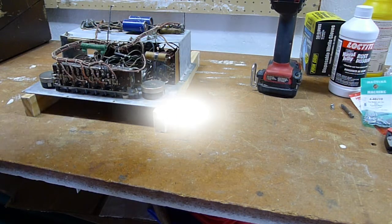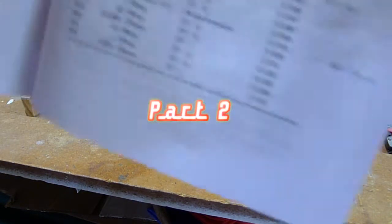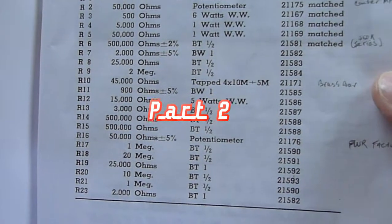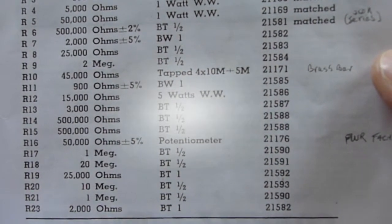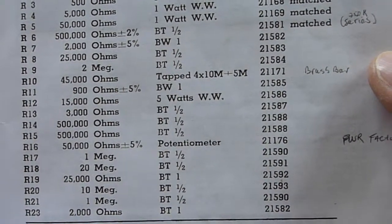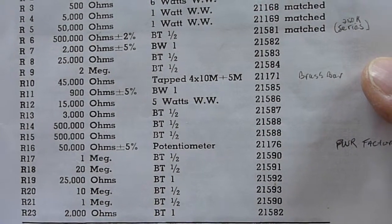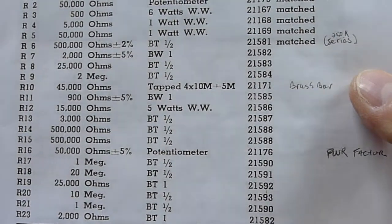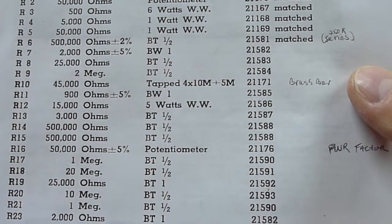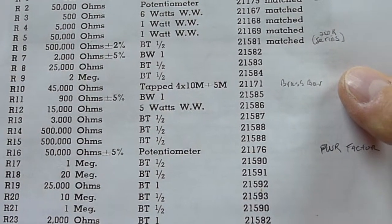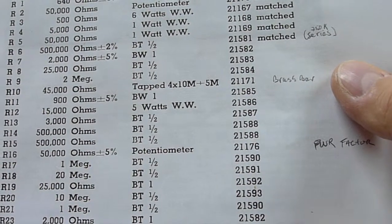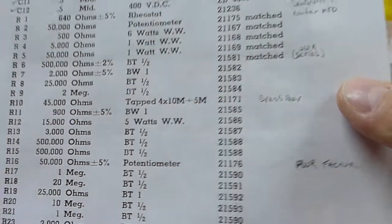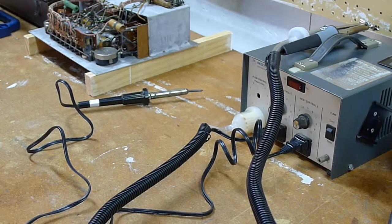Okay, just in case I didn't take it, I'll do it again. That brass bar, what I failed to tell you, is a resistor bar. So on this list it's R10, 45k ohms tapped four times - that's tapped four times at 10 megohms and once at 5 megohms.